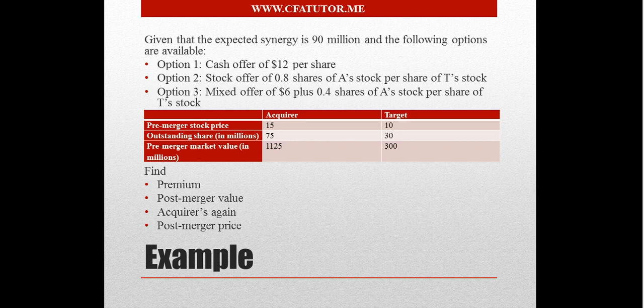So in this case, we're analyzing three cases. The first option is the cash offer of $12 per share. The second option is the stock offer of 0.8 shares, which is the ratio of A stock per share of T stock. The third option includes a mix of $6 and 0.4 shares of A stock per share of T stock. We have information over here regarding the acquirer and the target pre-merger stock price and outstanding shares.